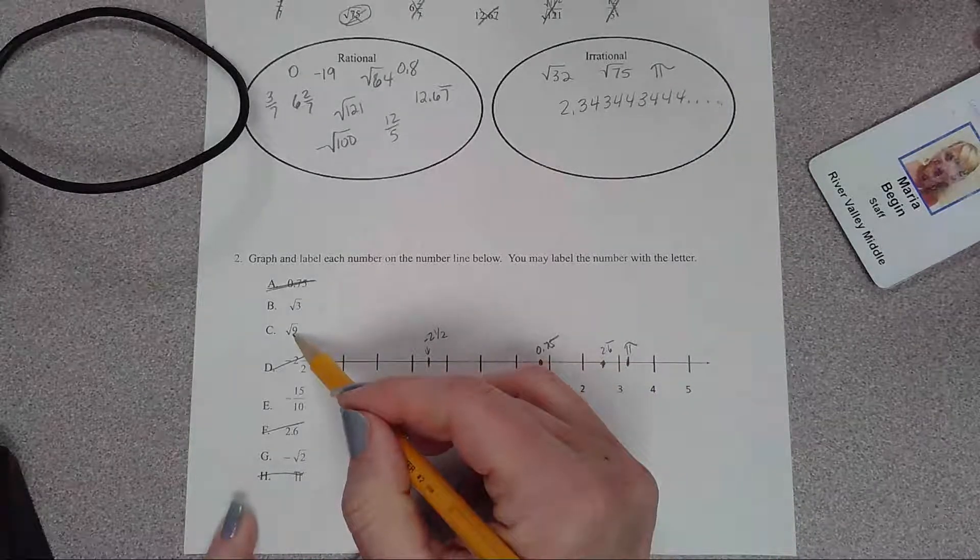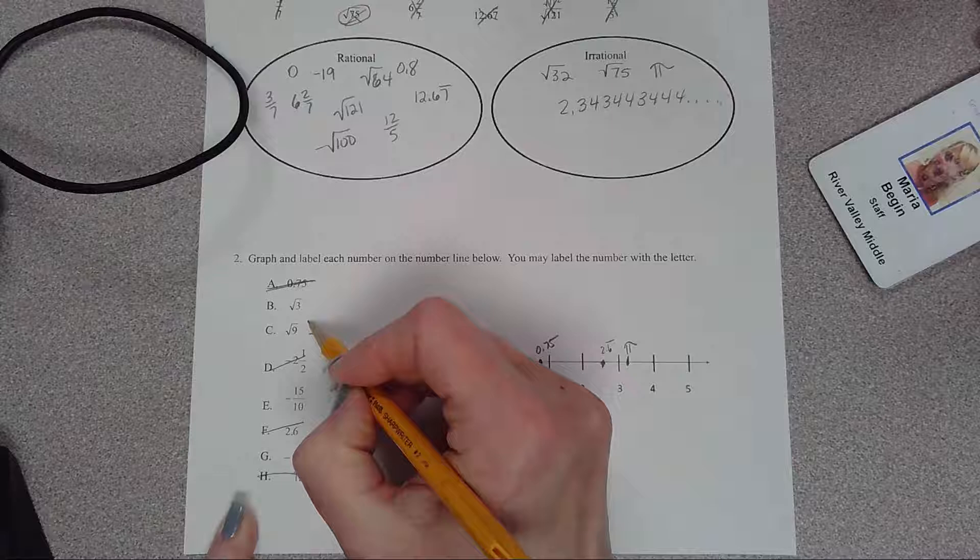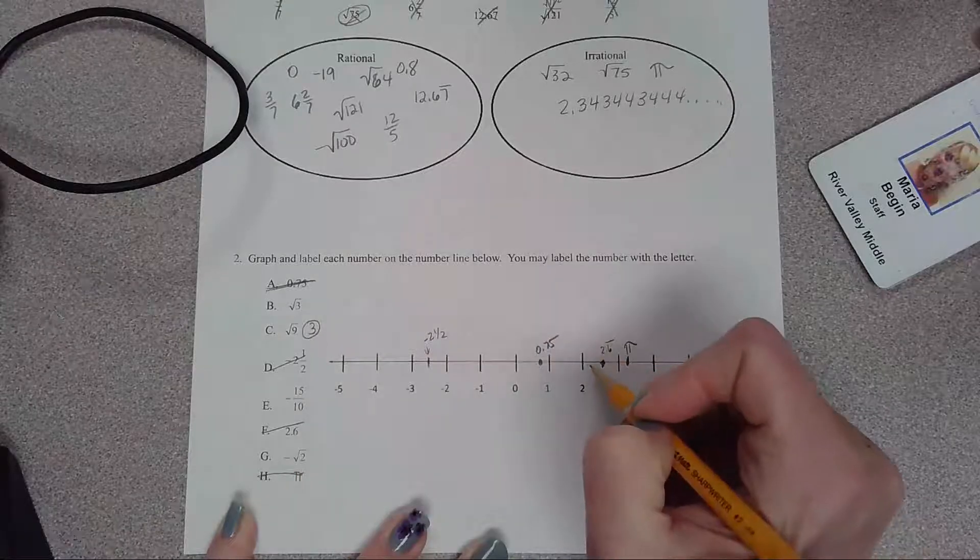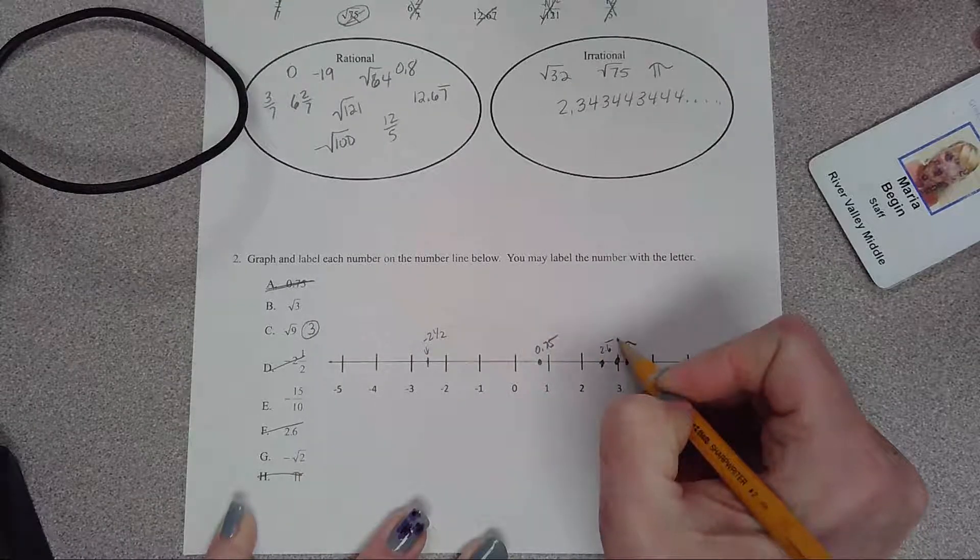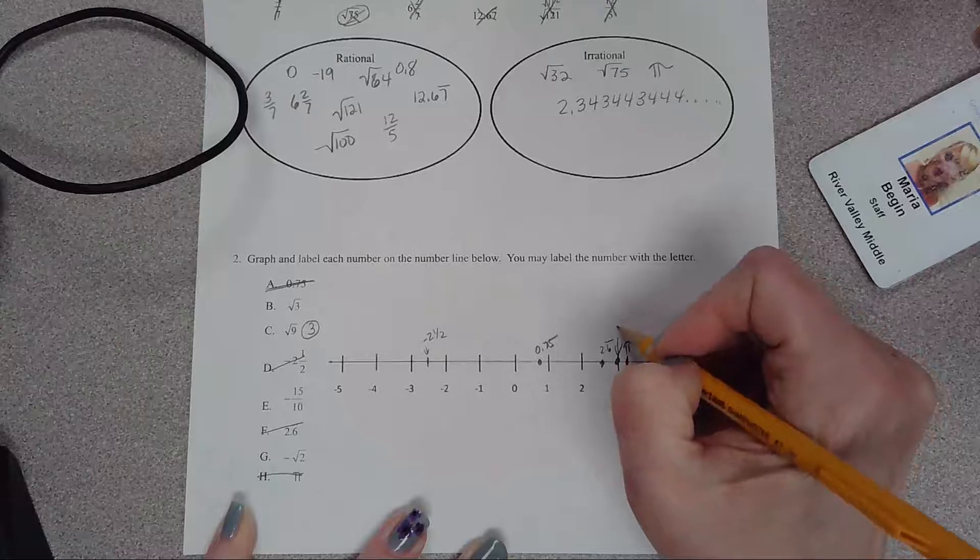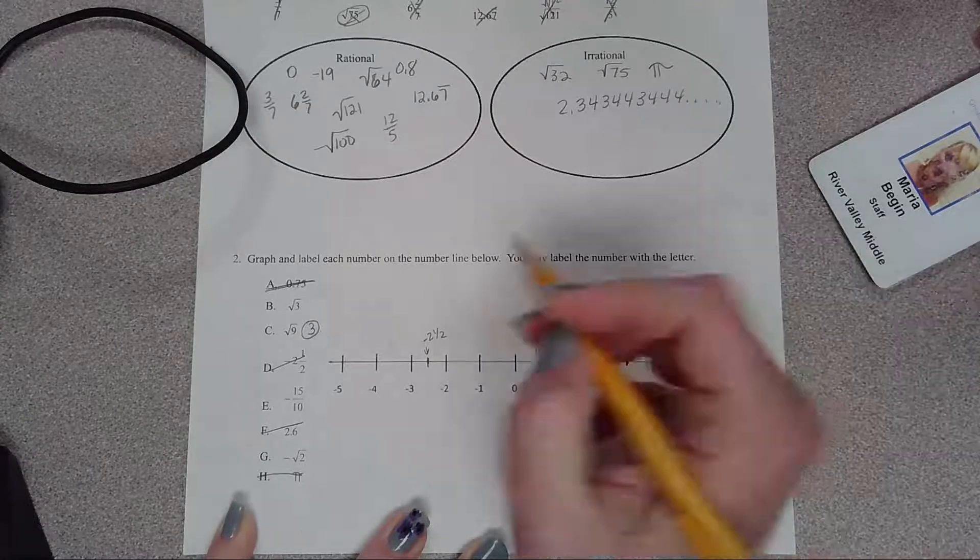Square root of 9. Nine is a perfect square, so that is 3. So I'm going to put that one right here. Square root of 9. Could you have labeled it C? Yes, probably.